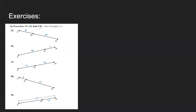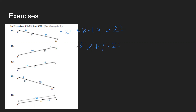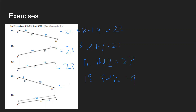Some other exercises between 15 and 22 — find FH. FH equals FG plus GH. For number 15: FG is 8, GH is 14, so FH equals 22. For number 16: 19 plus 7 gives you 26, so FH is 26. For number 17: FH is 11 plus 12, which gives you 23. For number 18: FH is 4 plus 15, which gives you 19.